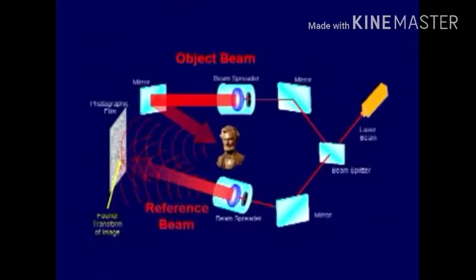That's called a hologram. Some people call it lensless photography — it's a little misnomer, because you do have some lenses to organize the light to get it where you want it. The point is, what's on the film is mathematically a Fourier transform of the image. It's not in the space domain; it's in the frequency domain.